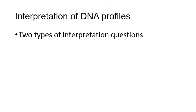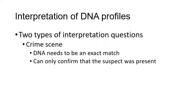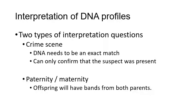Looking at DNA profiles, there are two types of interpretation questions that pop up most of the time. The first one is a crime scene - remember that with a crime scene the DNA profile needs to be an exact match, and it can only confirm that the suspect was present at the crime scene. It doesn't necessarily say that they are guilty of the crime, so be careful with your wording. The second type would be paternity or maternity, and for that one the offspring will have to have bands from both parents.